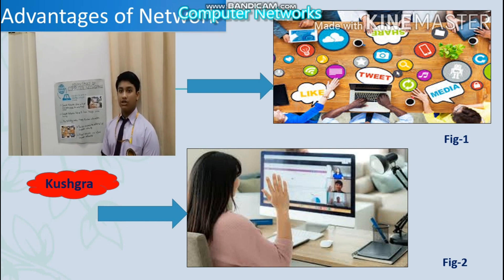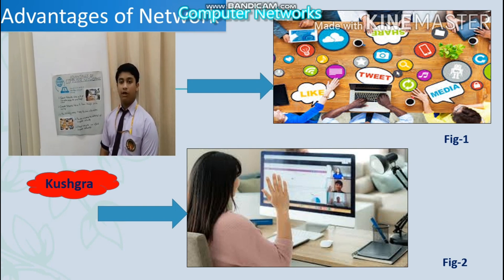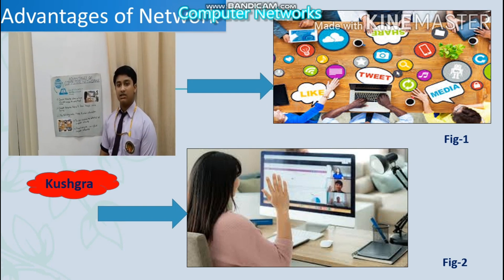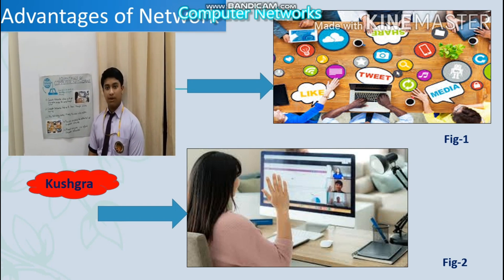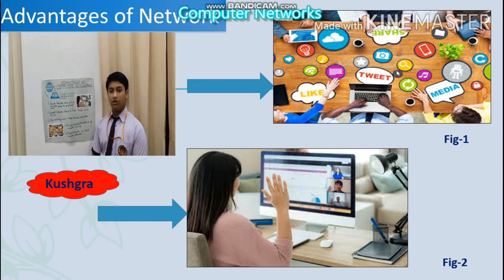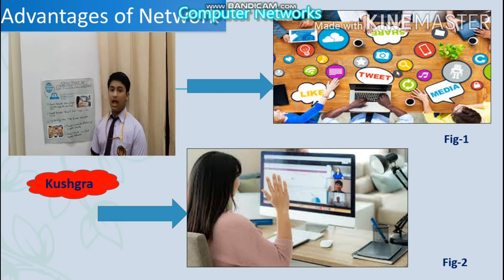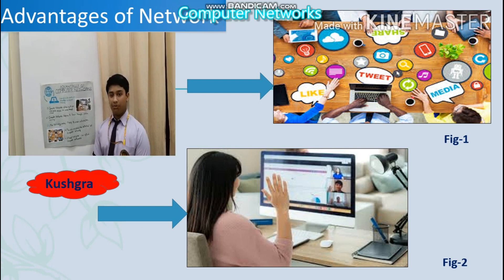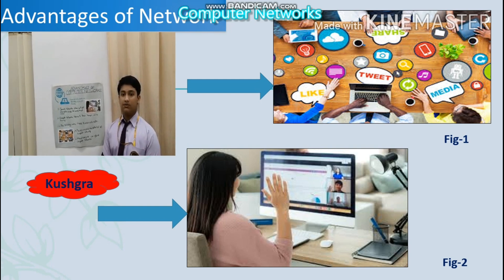Technology makes it easy to share information, which is beneficial for sharing large-sized files quickly and easily. The fourth point is you can expand the potential of computer networks — if you have two computers at home you can create a network, and the flexibility means you can add more computers to that network. Finally, almost anyone can afford a computer network. These were a few points on the advantages of computer networks. Thank you.